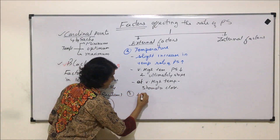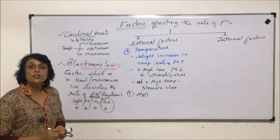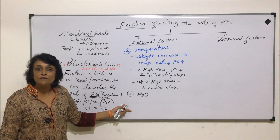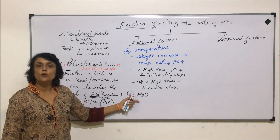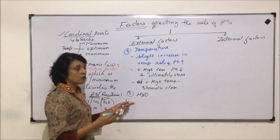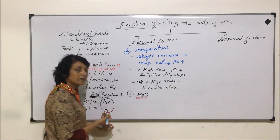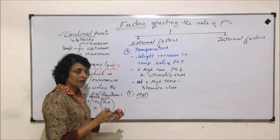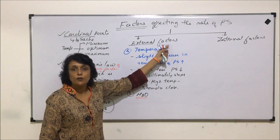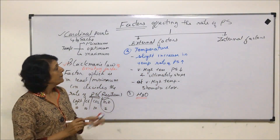The fifth external factor is water. Water is a raw material for photosynthesis, so obviously if raw material is not available, the photosynthetic process would slow down and stop. The effect of water on photosynthesis is quite obvious since it is a raw material.